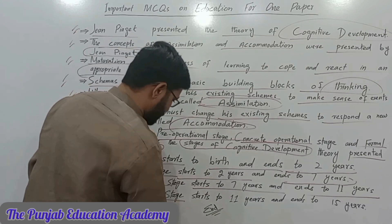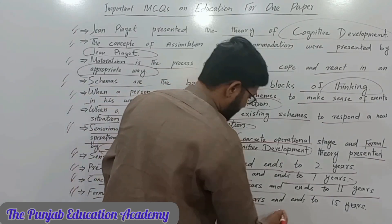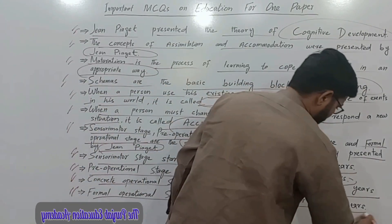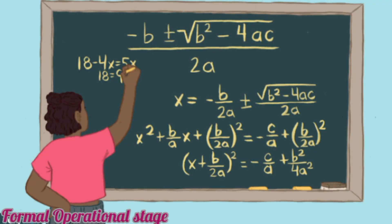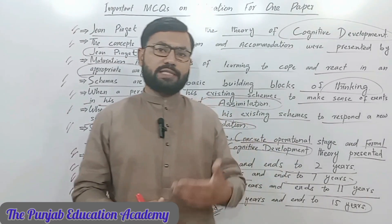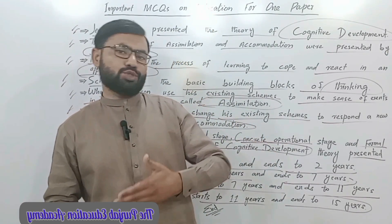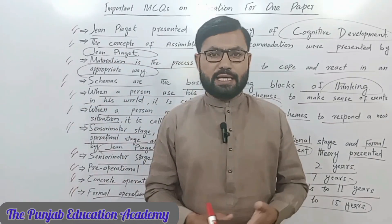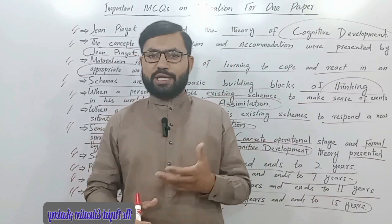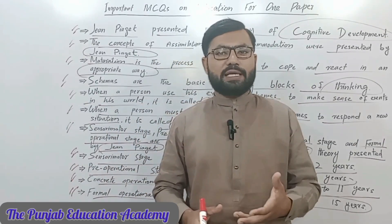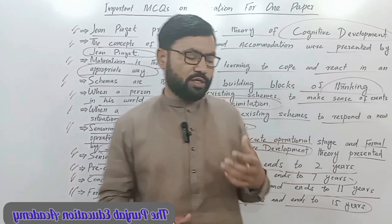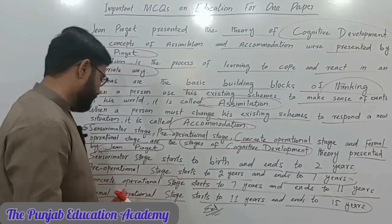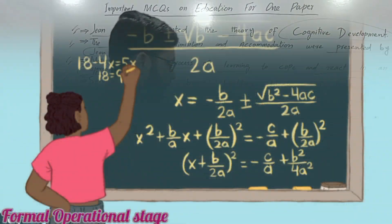The Formal Operational Stage — the fourth stage of cognitive development theory presented by Jean Piaget — starts at eleven years and ends at fifteen years. Logical abstract thinking, problem solving, and metacognition are the specific characteristics of this stage.